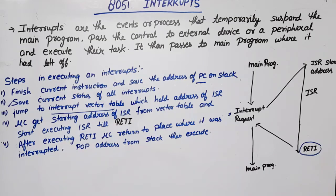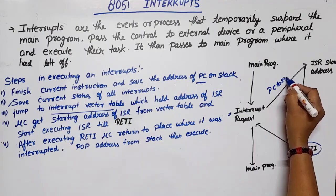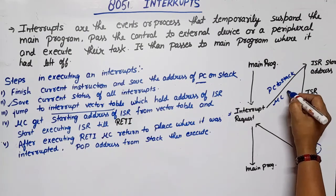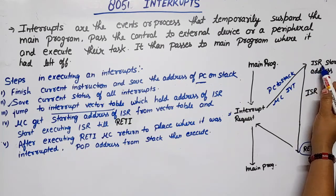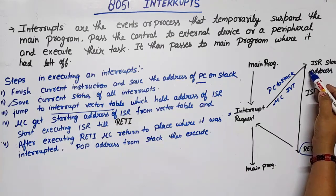The microcontroller jumps to the interrupt service routine — the ISR starting address is fetched from the interrupt vector table. The PC is loaded with that starting address from the interrupt vector table, and execution of the interrupt service routine begins from there.